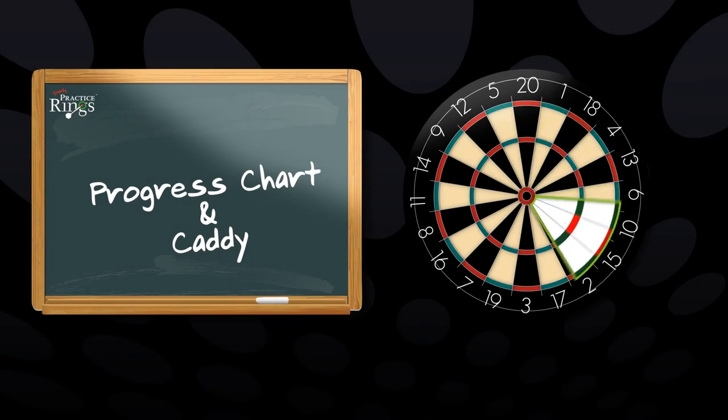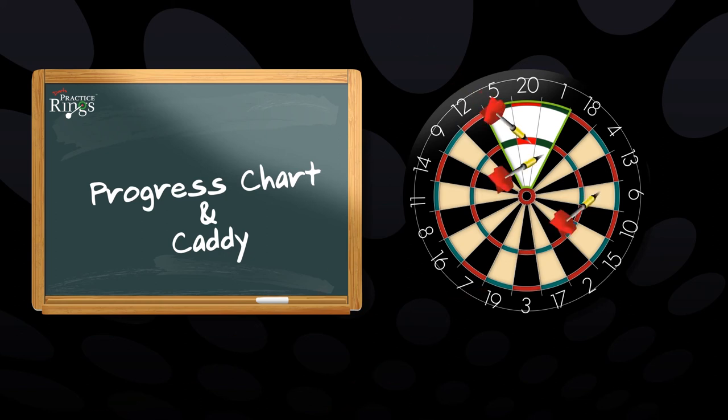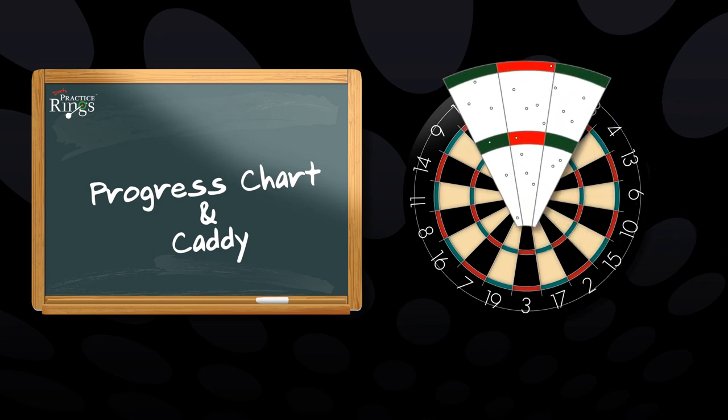Whenever they want to measure their progress, a new progress chart is placed into the chart caddy positioned over the same area of the dartboard, and the same number of darts are thrown. A player's performance can be measured by comparing and referencing these results back to previous charts.